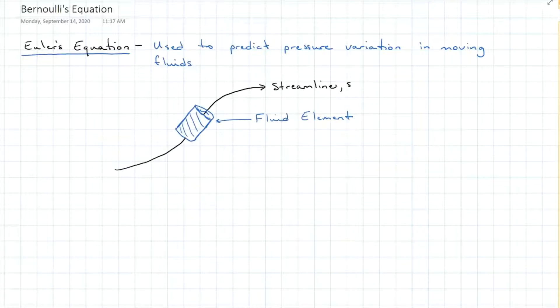In this lecture, I want to talk about Bernoulli's equation, but first we're going to remind about Euler's equation. Euler's equation is used to predict pressure variation in moving fluids. So if we begin with a frictionless steady flow of a fluid along a streamline and Newton's second law, force is equal to mass times acceleration, we can derive Euler's one-dimensional equation.